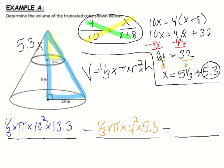From here, I'm going to go straight to my calculator. I'm going to type in this whole entire expression. So we have 1/3 times pi times 10 squared times 13.3. And then you're going to subtract away 1/3 times pi times 4 squared times 5.3. Doing so gives you the following number. And just a heads up, the pi symbol is just a number, a symbol on the calculator.